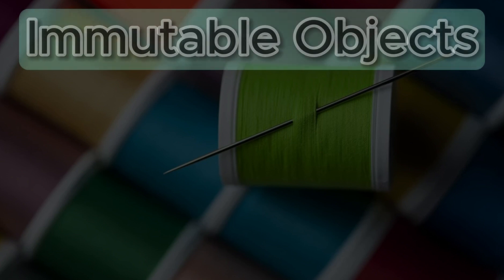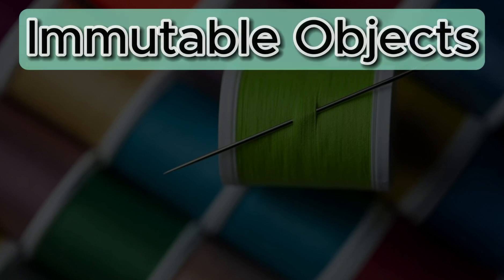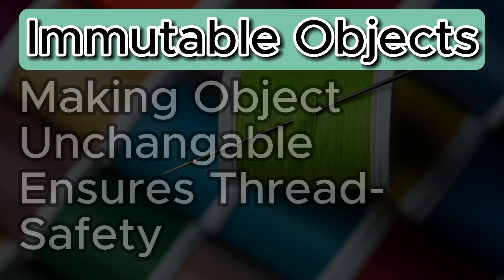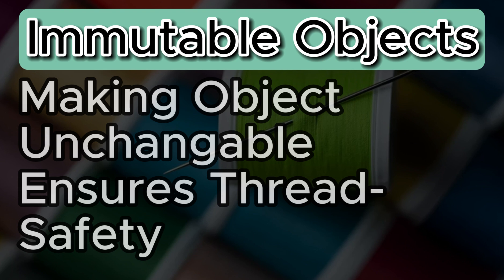Now lastly, we have immutable objects. An immutable object is like a message in a bottle — once it is sealed, it cannot be changed. In Java, if we make our objects unchangeable, we eliminate the risk of threads altering them simultaneously. For instance, if we have a class representing a book, making it immutable ensures that its title and other content remains constant. No thread can mess with the book's content once it is created.